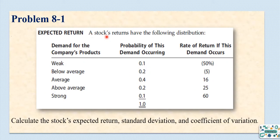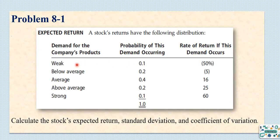Problem 8-1: A stock's returns have the following distribution. The demand for the company's products is analyzed under different scenarios: weak, below average, average, above average, and strong. The probability of each scenario is given. For example, the probability of weak demand is 0.1, which is equivalent to 10%. The probability of below average demand is 0.2, and so on. The summation of all probabilities must equal 1, which is 100%.